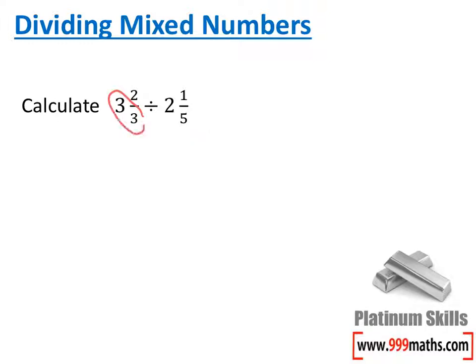So, I'm going to do 3 times 3, which gives me 9. Then I'll add it to the top, which gives me 11, so that's 11 over 3.